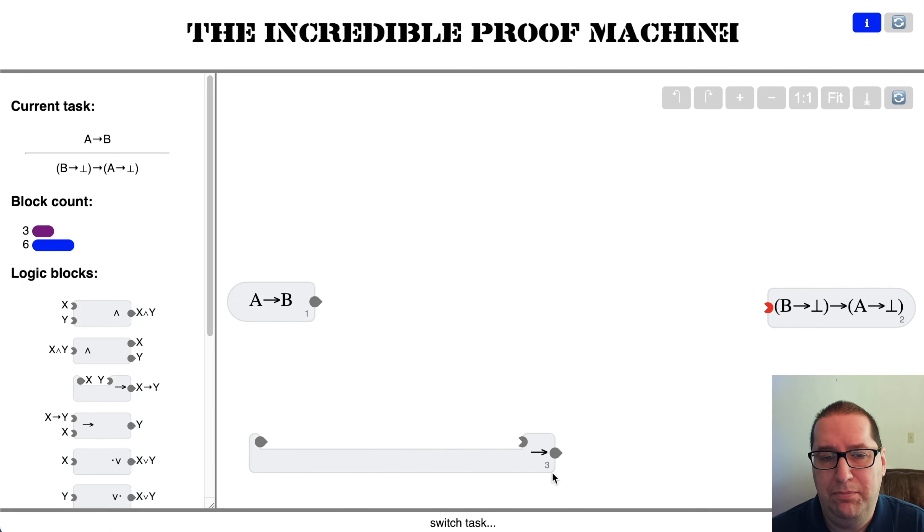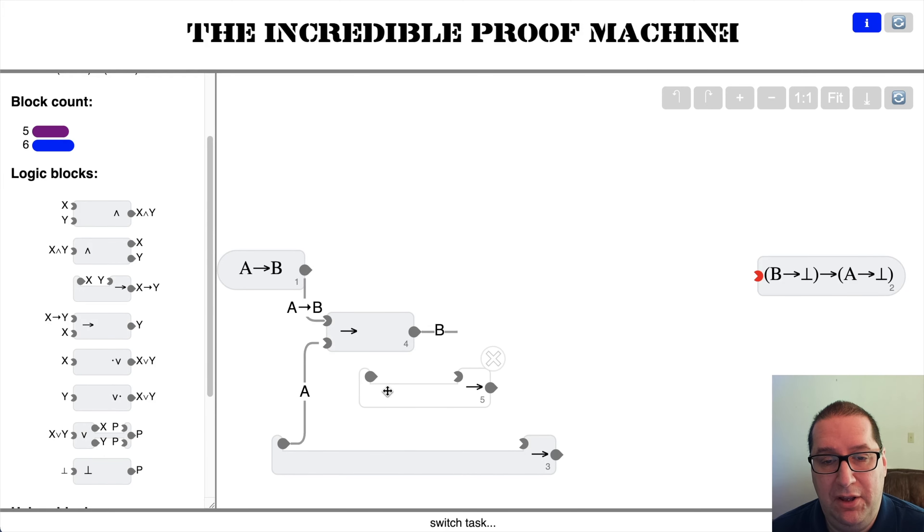We've got A implies B. That gives us a B. We want this to be absurd, probably. So let's further assume implication inside our implication that I think we want B implies absurd to be out of this. Now I'm tripping myself up over my own feet here. Let's try this again.